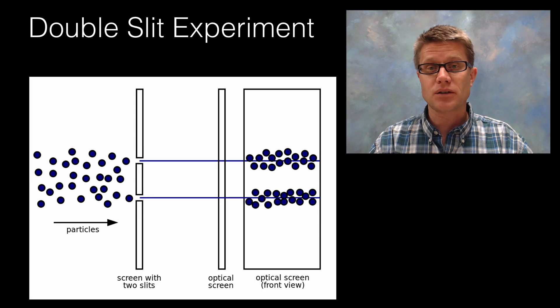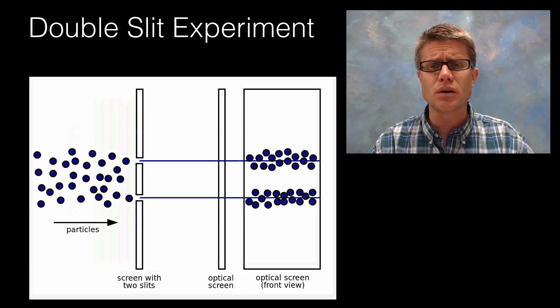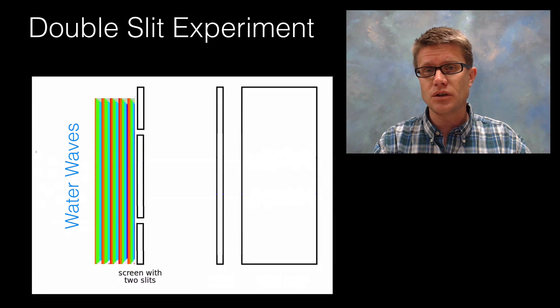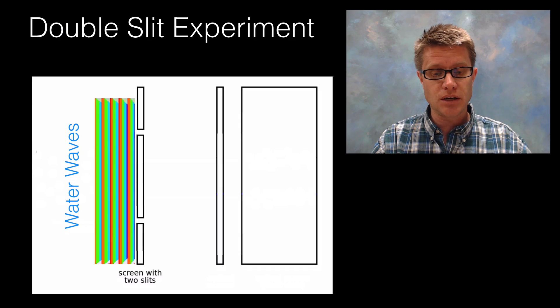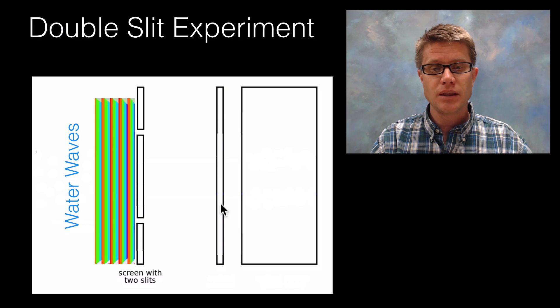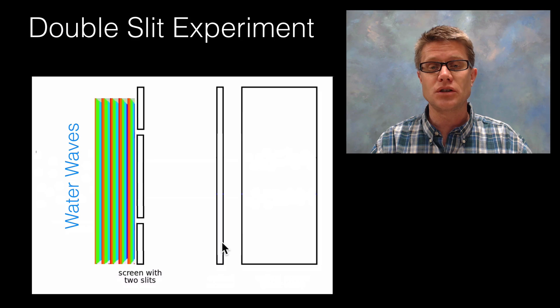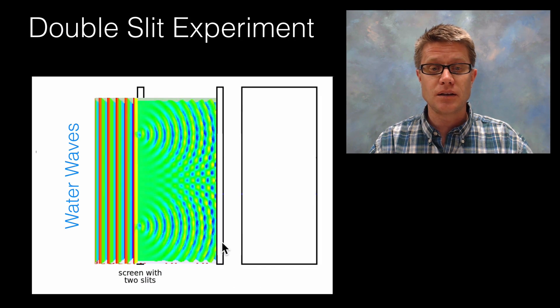And so if we remove both then we're back to where we started. So you shouldn't have learned anything new. This is how the world works. Now let's say we're using waves now. And so imagine instead of shooting spray paint through these slits we've now got a wave tank where we're generating waves on the left side. Those waves are moving through the two slits. And then we have detectors on the screen that are showing us what's the amplitude of those waves. How much energy is being transferred through.